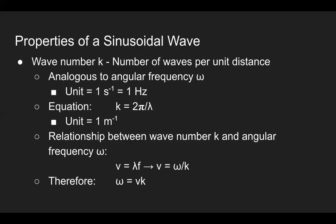One final property of sinusoidal waves is the wave number, which is denoted by the letter k. It is essentially the number of waves per unit distance. If we think about angular frequency, it is the number of waves that occur per second. The units were in hertz or seconds to the negative one power. For the wave number, the governing equation is k = 2π/λ. Since we know wavelength is in meters, then the units for wave number is meters to the negative one power.